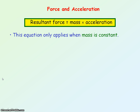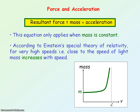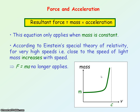The F equals mA equation is only valid when the mass of the object is constant. According to Einstein's special theory of relativity, if the object is moving at very high speeds — that is, speeds close to the speed of light, which is 3.0 times 10 to the 8 metres per second — then the mass of that object increases with speed. So at very high speeds the mass is not constant, and F equals mA no longer applies.